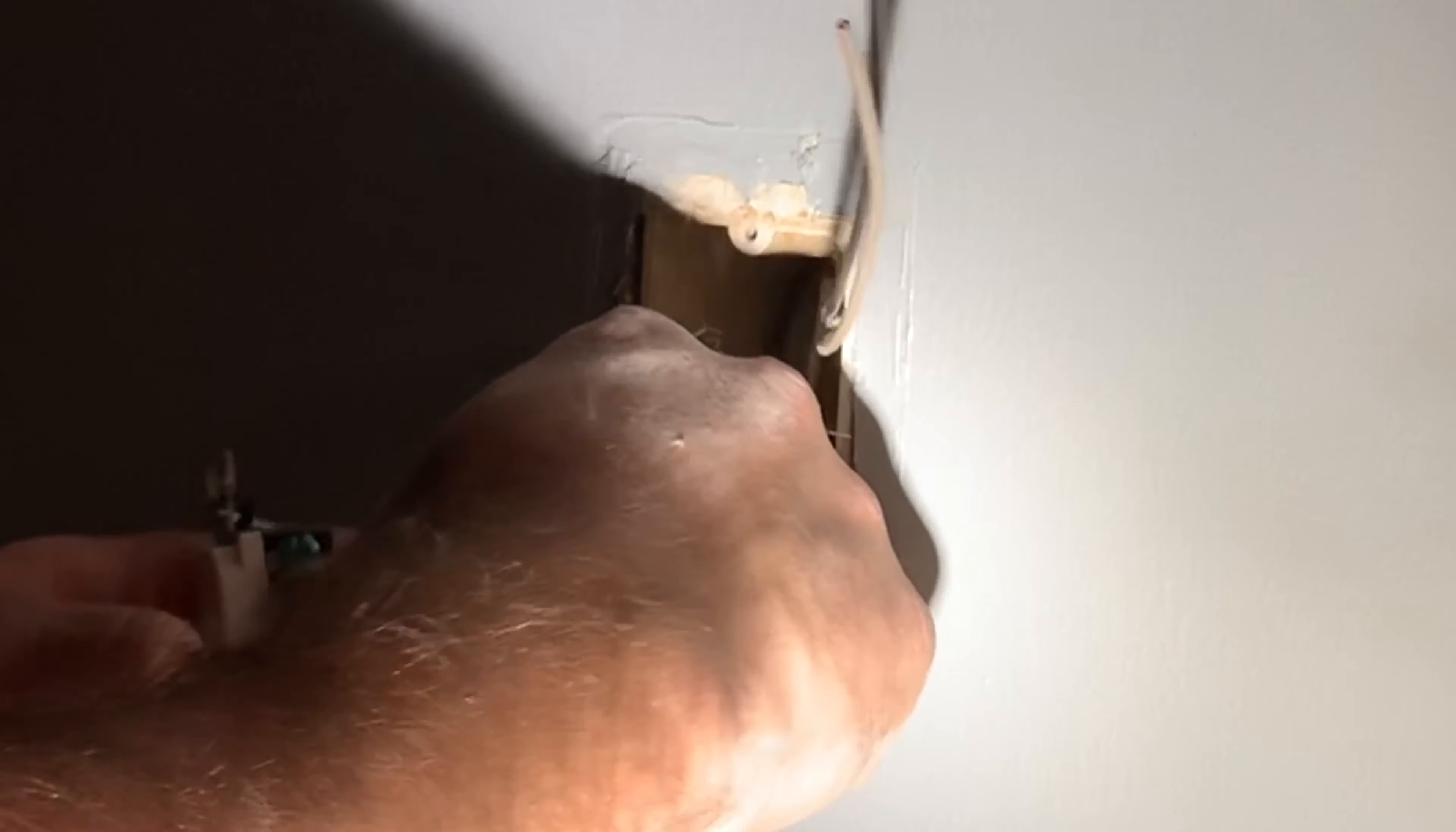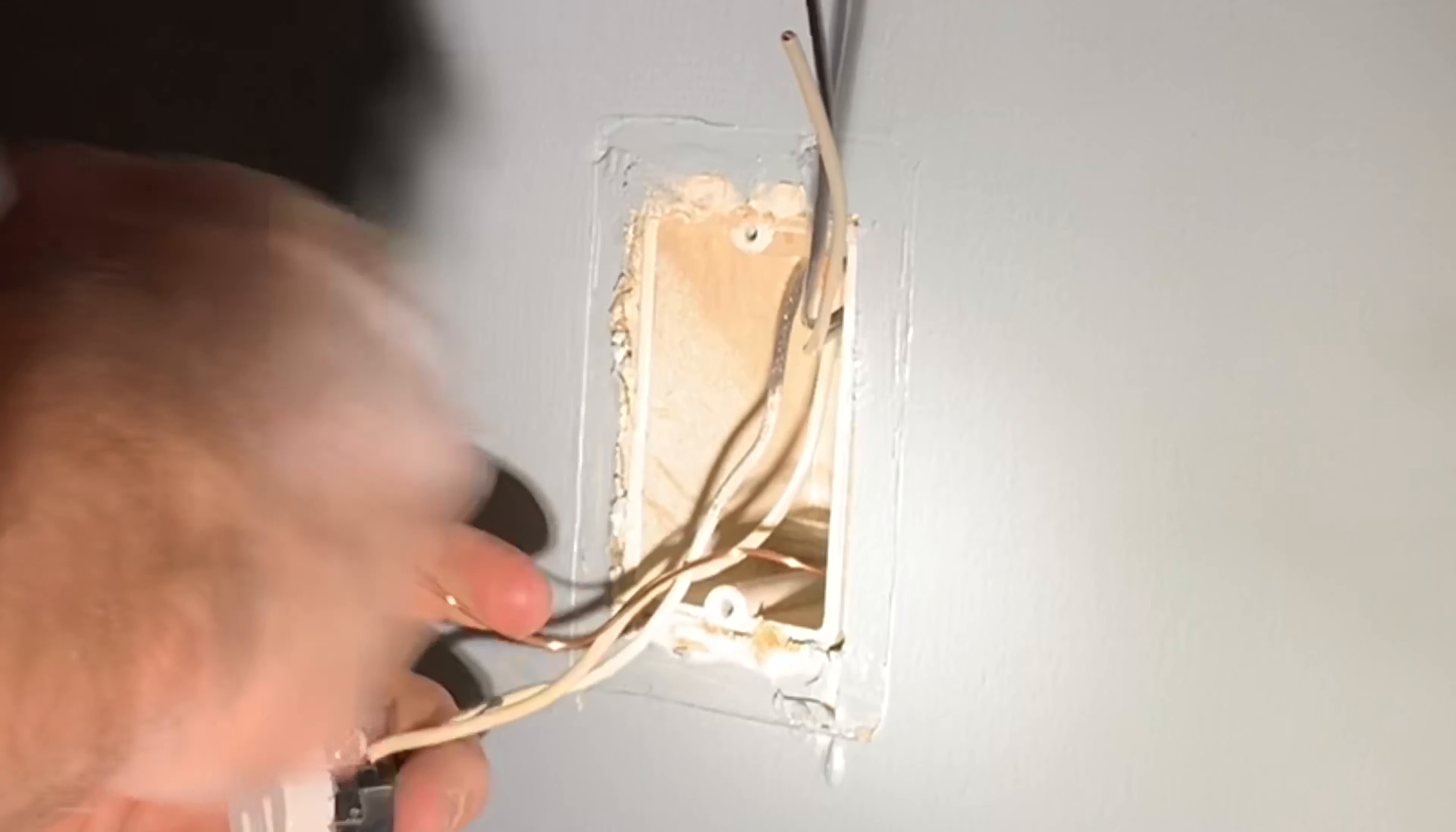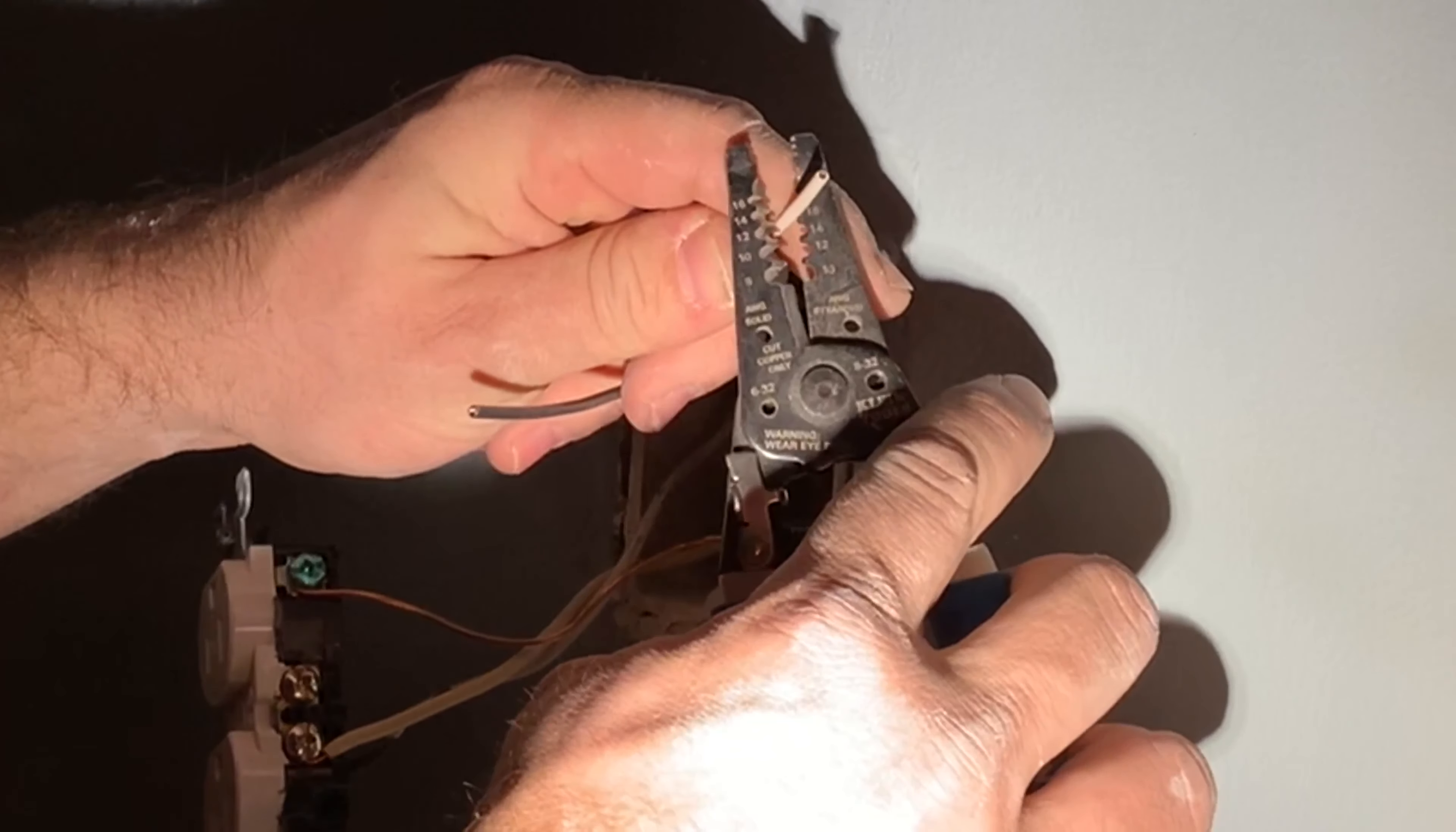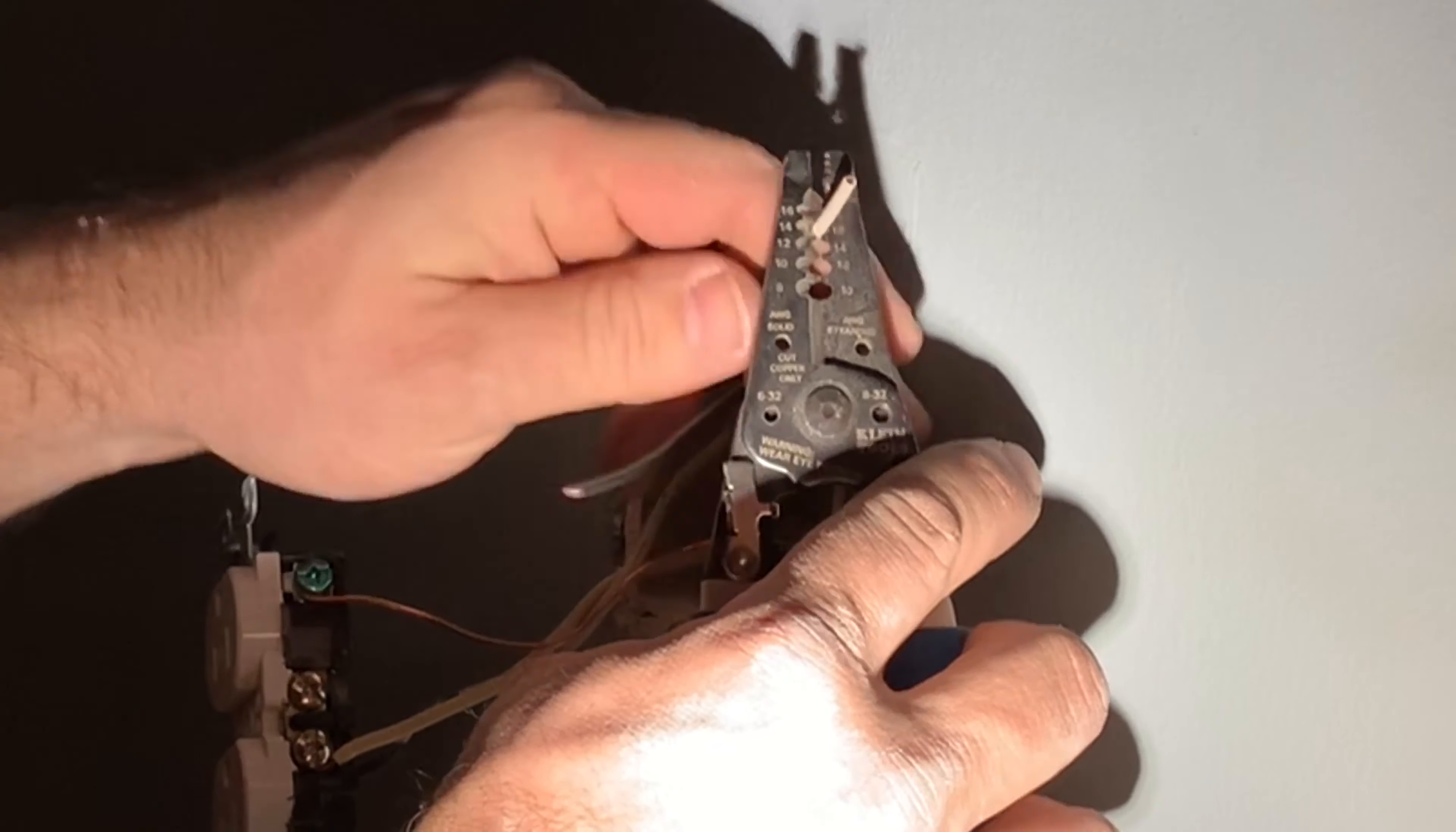In the other video I showed you how to always do the loop the way you're screwing it on, and then you cut off the excess of the wire. This is 14-2, so you go to 14 on your wire cutters.